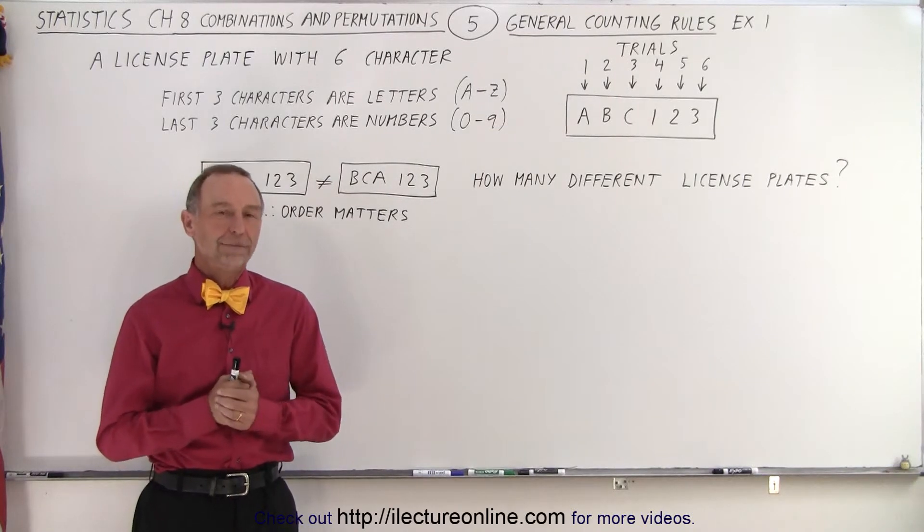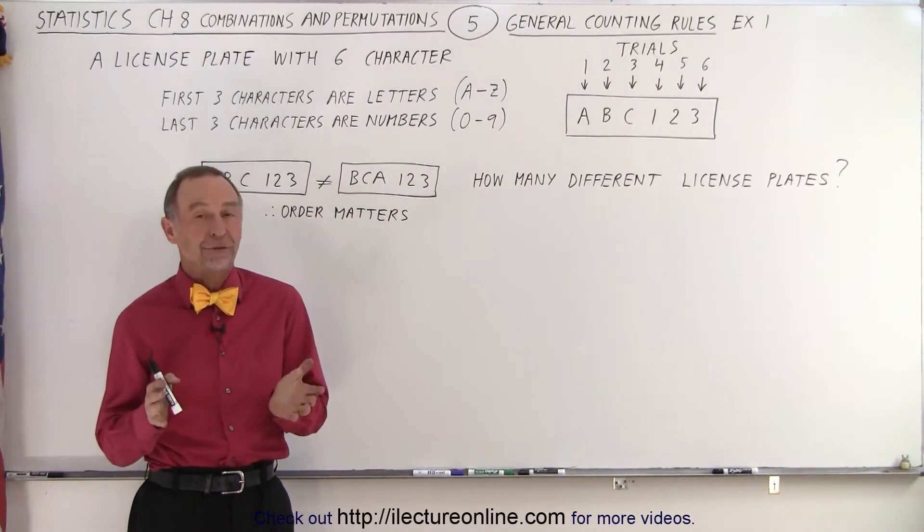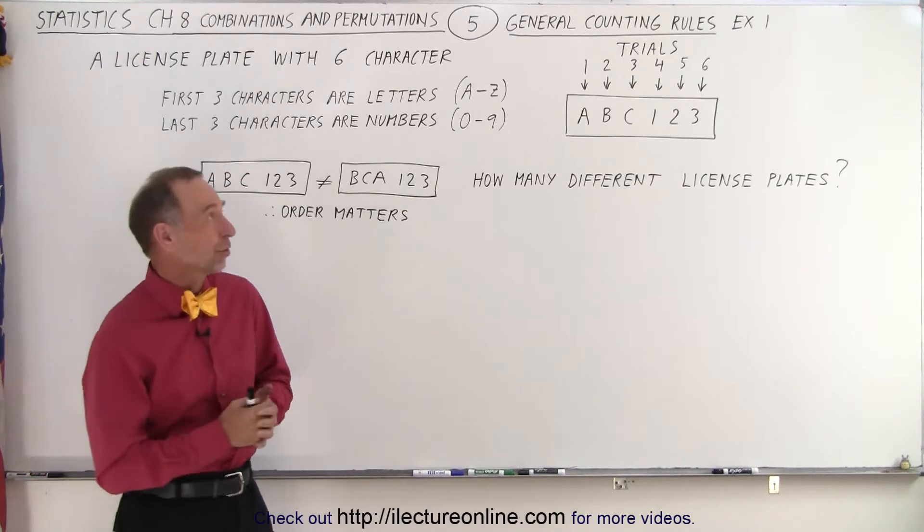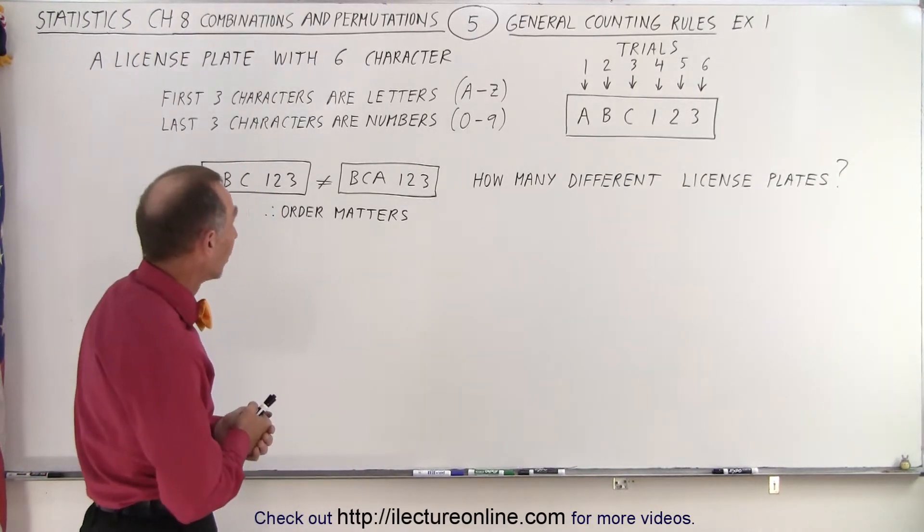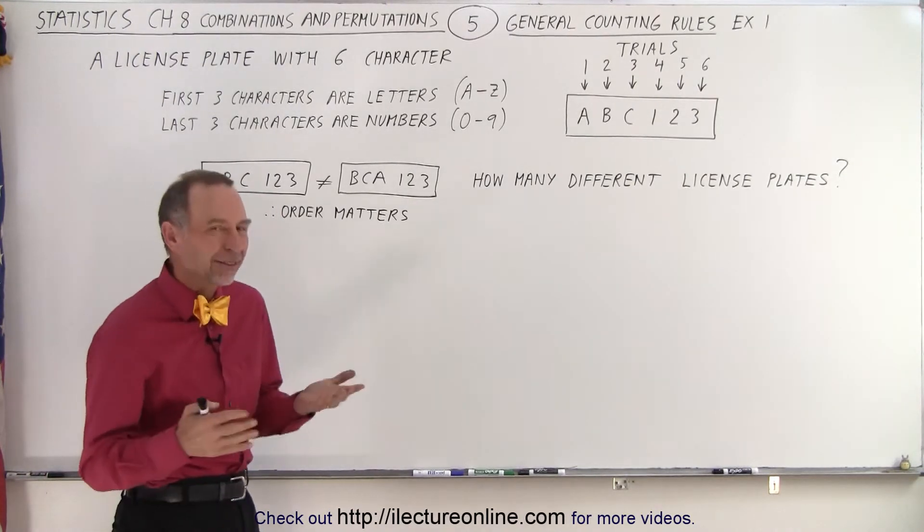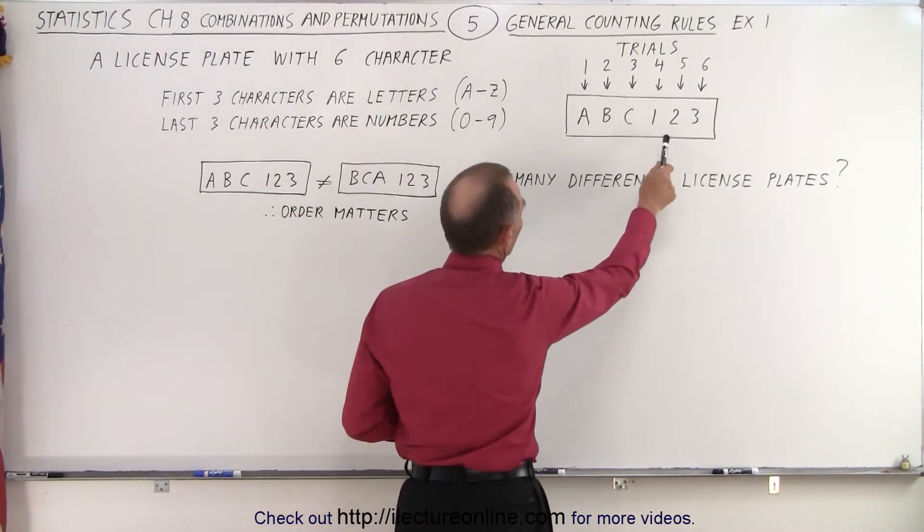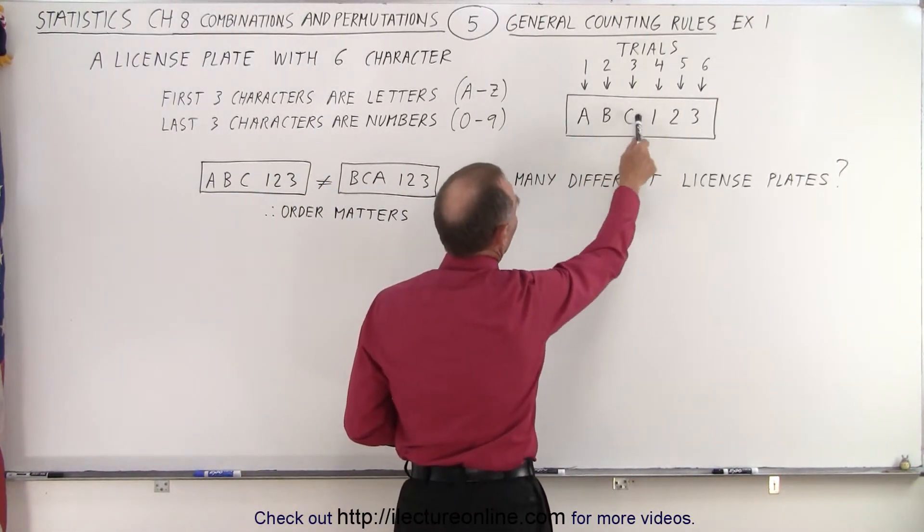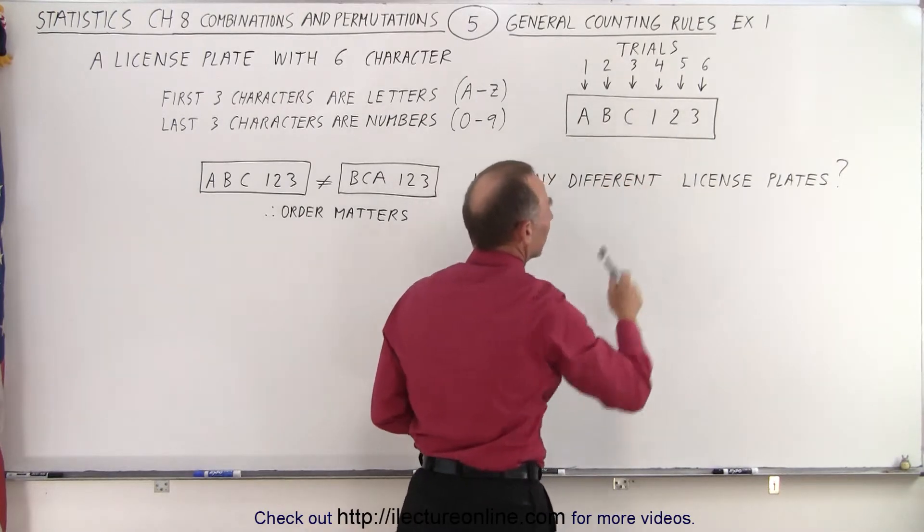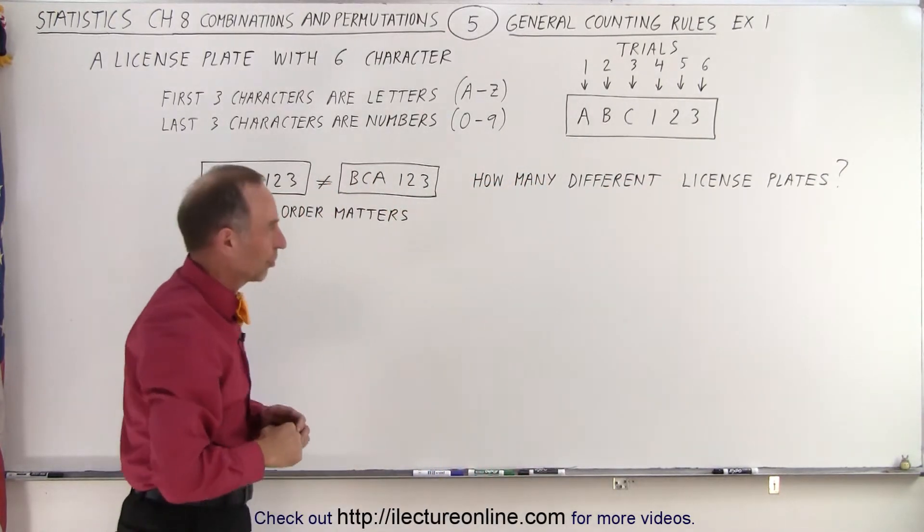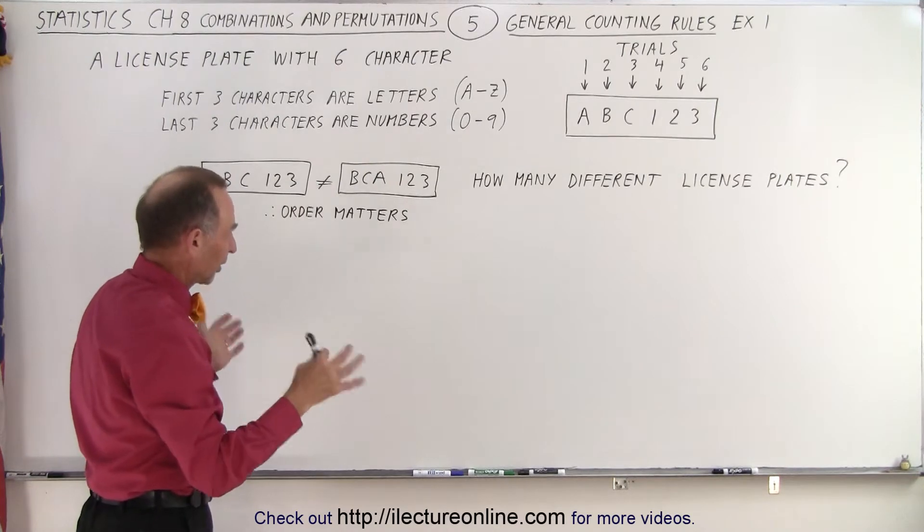Welcome to our lecture online. Now let's look at an example of our basic counting methods or fundamental counting methods. So let's say we're looking at license plates and here we have a license plate with six characters. The first three are alphabet characters and the last three are number characters and so there's a total of six.